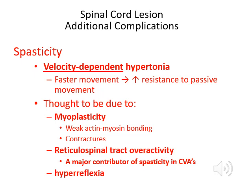Once you've had spasticity for a while with very high muscle tone, contractures begin to form, making it harder to straighten the arm and lengthen the muscle. There is also weak actin and myosin bonding — instead of cross bridges coming apart to allow muscle relaxation, many cross bridges remain formed, maintaining a higher tone than would normally be the case.